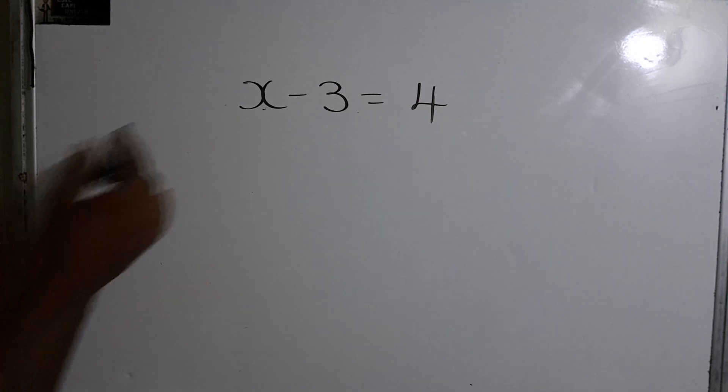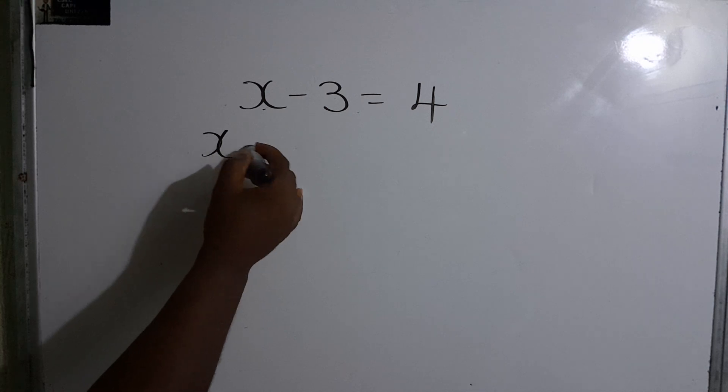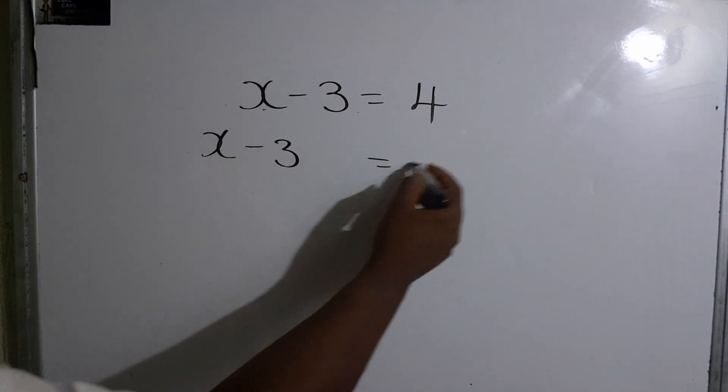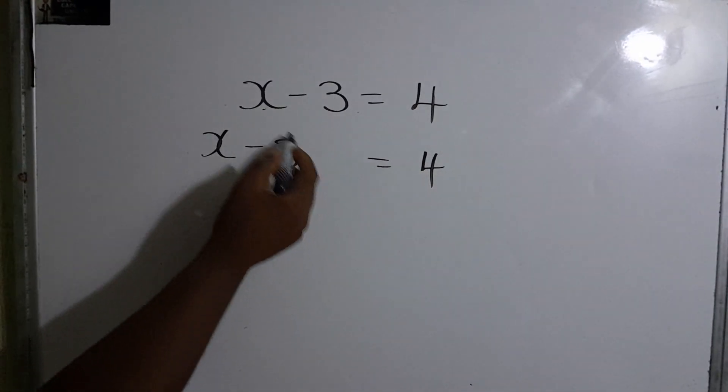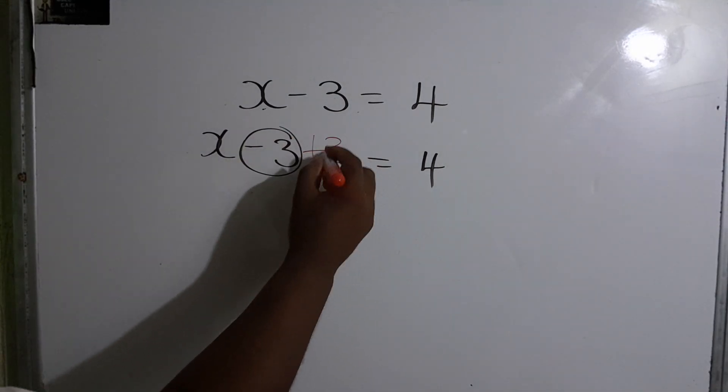The first one is x minus 3 equals 4, and of course we just take the inverse. So all we have to do is take the opposite of what's happening. The opposite of minus 3 will be plus 3, so we add 3 to both sides.